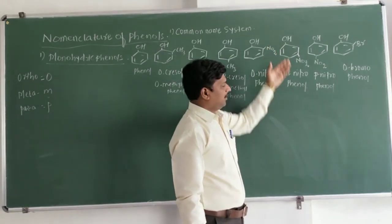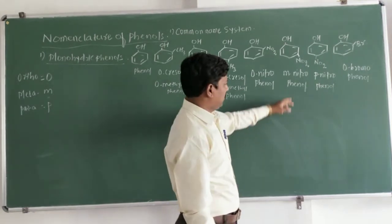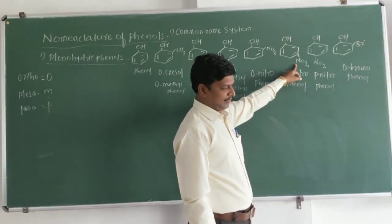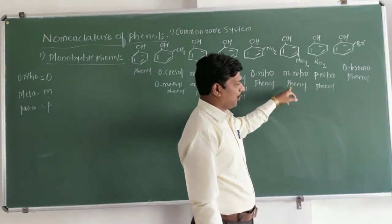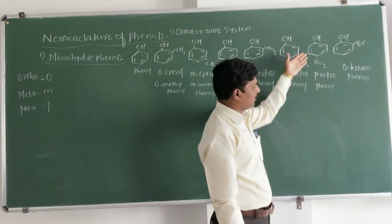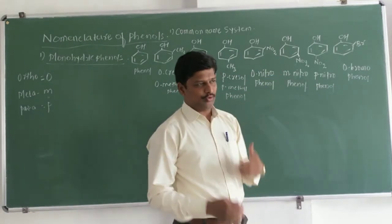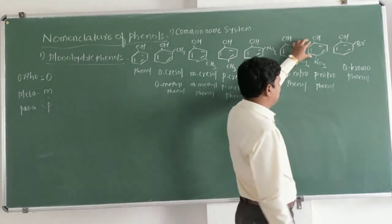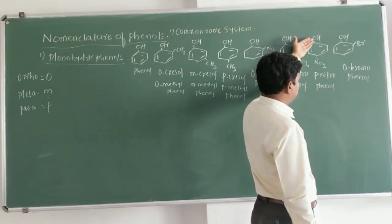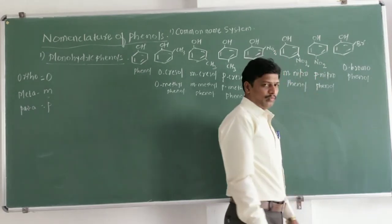In the next structure, the two substituents are one after the other, so the NO2 group is at the meta position — therefore the common name is meta-nitrophenol. In the following structure, the OH and NO2 groups are in the opposite position, so the NO2 is at the para position — therefore it is para-nitrophenol.